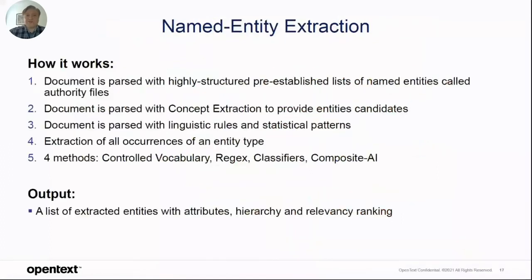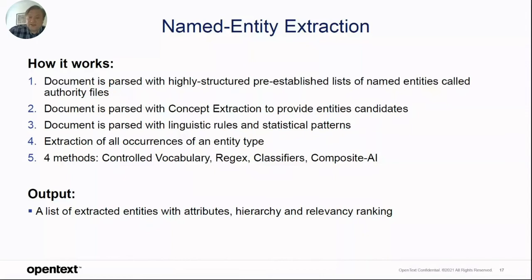Then we have named entity extraction, where documents are parsed and validated against pre-established lists of named entities that we call authority files — essentially vocabularies. We get the concept extractor working behind the scene to provide candidates for those entities. We parse documents using linguistic and statistical rules and patterns, then extract different entities along with their attributes, hierarchy, and relevance ranking. We use four methods: controlled vocabulary, regex, classifiers — a machine learning technique — and then composite AI, which combines all three.